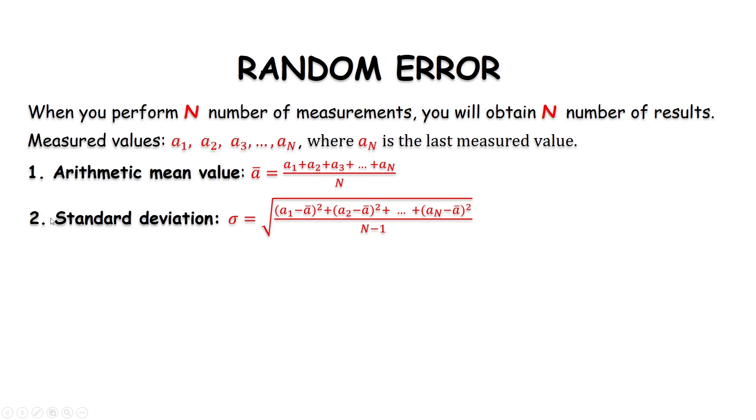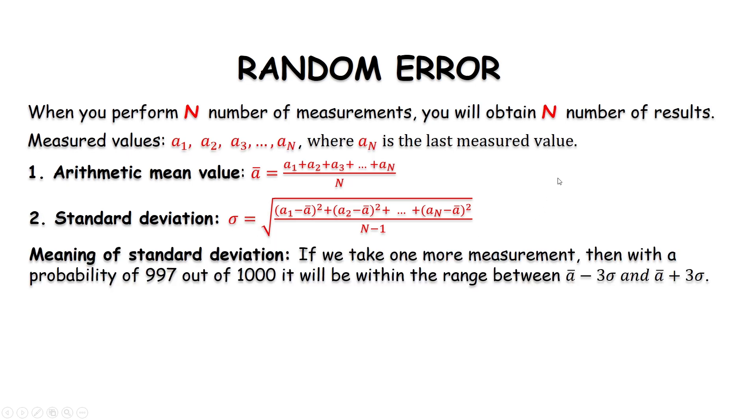Second, we calculate the standard deviation by this equation. Standard deviation means that if we take one more measurement, then with a probability of 997 out of 1000, it will be within the range between a_min minus 3σ and a_min plus 3σ.